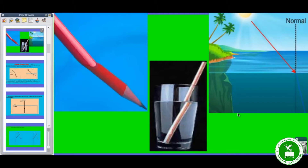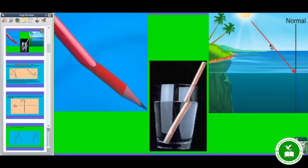You see this pencil — it looks bent. Some portion is inside water and some portion is outside in air, so it looks bent. And you see this one — it looks broken or refracted. And here we have taken one incident ray from the Sun; this arrow represents one incident ray that strikes the water surface.